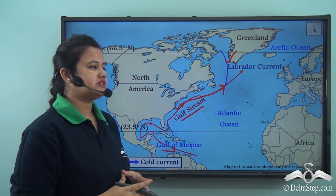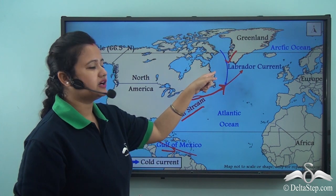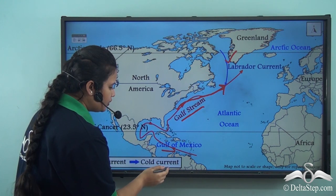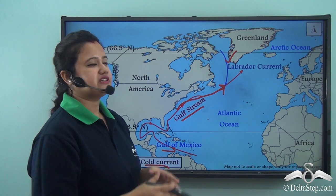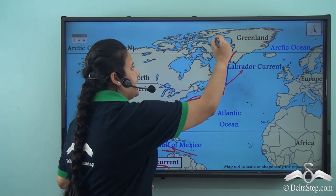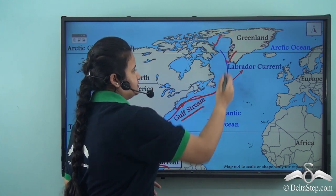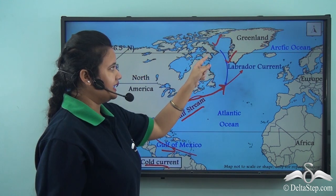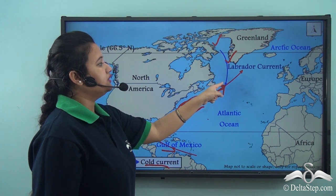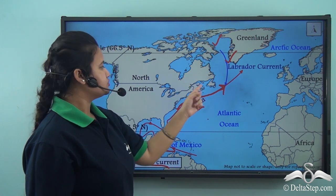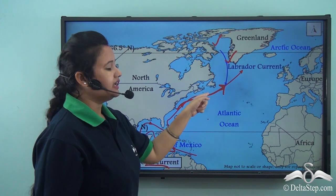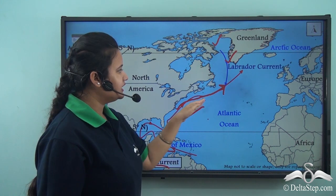The Labrador Current, marked in blue on the map, is a cold current. It is mainly active in the Arctic Ocean region and then proceeds southwards towards the northern coast of North America, where it connects with the Gulf Stream.